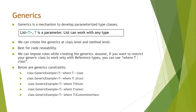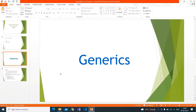We can create generics at class level and method level. It is best for code reusability — you can write one class and it can be reused for any type of objects. We can also impose rules while creating generics. For example, if you want to restrict your generic class to work only with reference types, you can use 'where T : class'. This is the constraint that you are putting on your class.